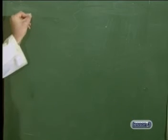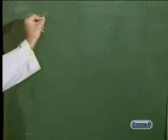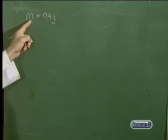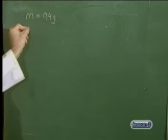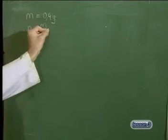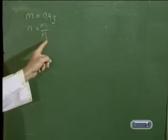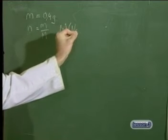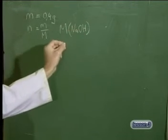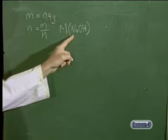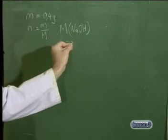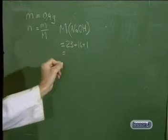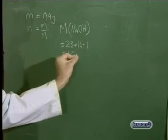Let's write down what we know. The mass of our weighed sample was 0.4 grams of the solute sodium hydroxide. To convert this mass into moles, we use the formula N equals M divided by capital M, the molar mass. The molar mass of sodium hydroxide — values from the periodic table — is sodium 23, plus 16 for oxygen, plus 1 for hydrogen, giving us a molar mass of 40 grams per mole.